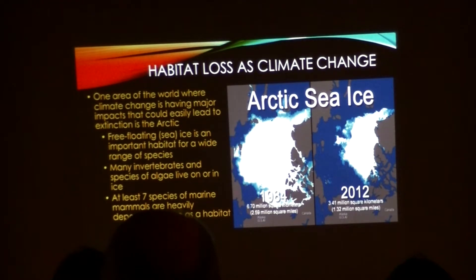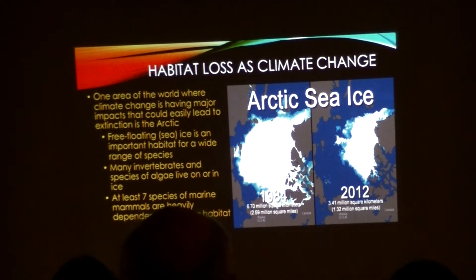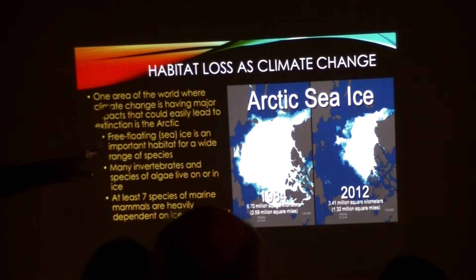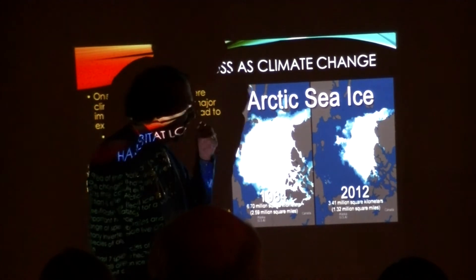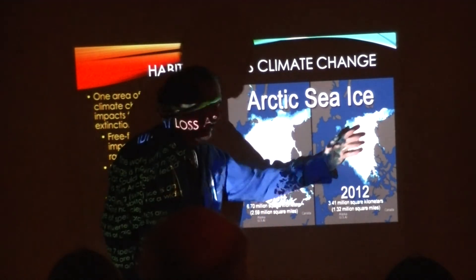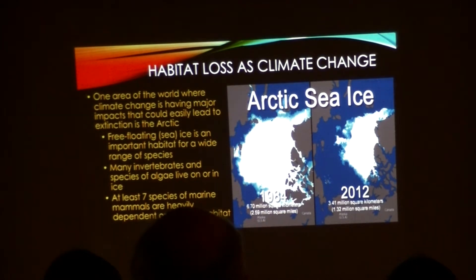When looking at the Arctic, there are several layers of what's happening with sea ice. There are a lot of invertebrates and species of algae which actually live on or in the ice — we're not sure exactly what will happen to them if the ice melts, but the suspicion is it probably won't be good. The key thing, especially with regards to megafauna, is that there are at least seven species of marine mammals that are heavily dependent upon ice as a habitat. When you're talking about ice as a habitat and habitat loss is the major factor in extinctions, you have to worry about what happens to the species that live there.